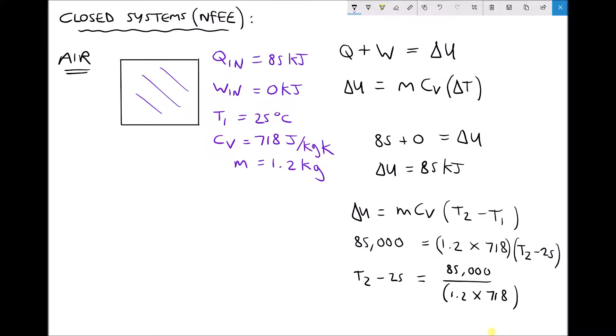The final step then will be to add 25 to each side. So we'll get T2 equals 85,000 divided by 1.2 times 718 plus 25, which equals 123.65 degrees Celsius. So the temperature of the air after heating is 123.65 degrees C.